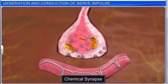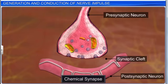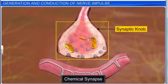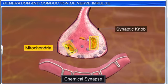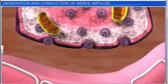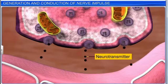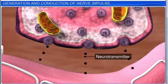Chemical synapses are common in the human system and consist of a pre-synaptic neuron, synaptic cleft, and a post-synaptic neuron. A pre-synaptic neuron ends with a synaptic knob. A synaptic knob has a large number of mitochondria and many synaptic vesicles. Each synaptic vesicle contains neurotransmitter chemical molecules such as acetylcholine.